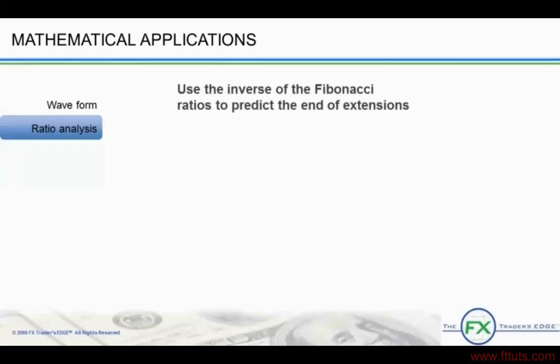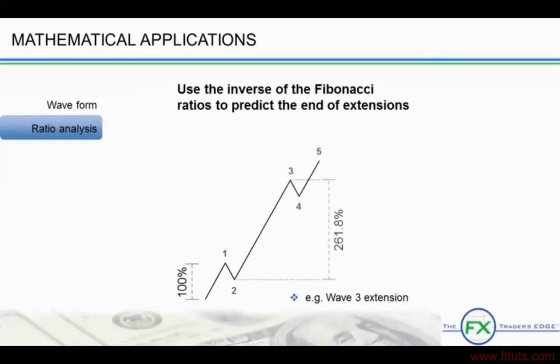And what about projections on new motive waves? The inverse ratios, 161.8%, 261.8%, and 423.6% act as barriers where extensions may stop. 161.8% is common. 261.8% is the next natural target. And 423.6% is also often observed.